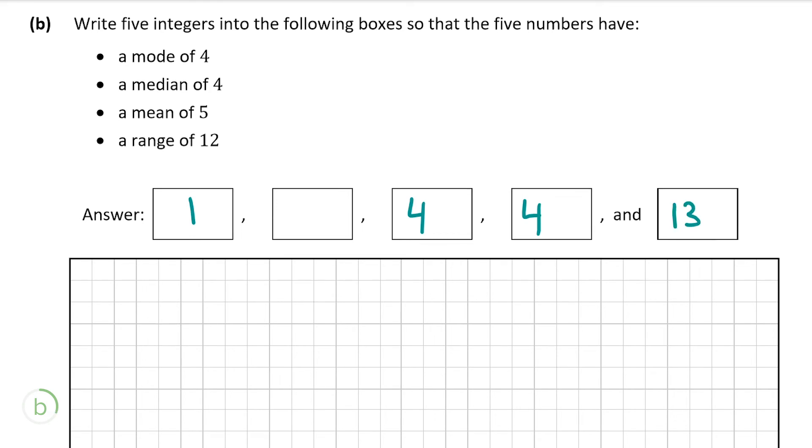So now to work out the number that is missing we can just plus 1 plus 4 plus 4 plus 13 then plus x which will be the number that we have to fill in, divided by 5 as now we have 5 numbers, and put that equal to 5 as it wants us to have a mean of 5. So we say 1 plus x plus 4 plus 4 plus 13 divided by 5 is equal to 5.